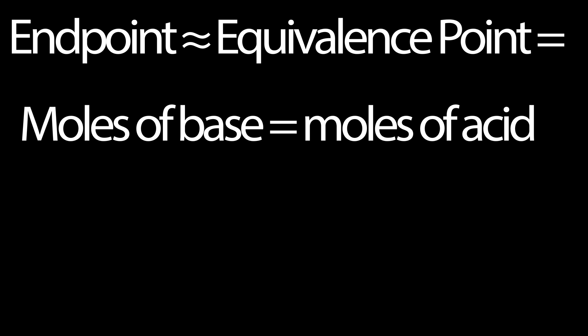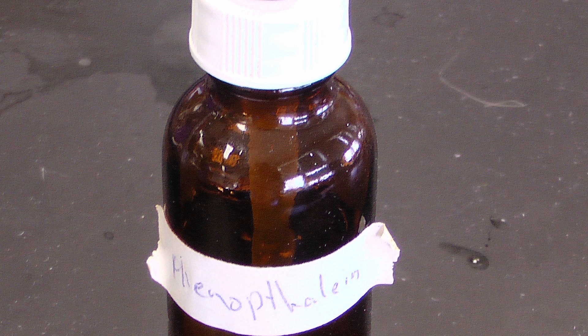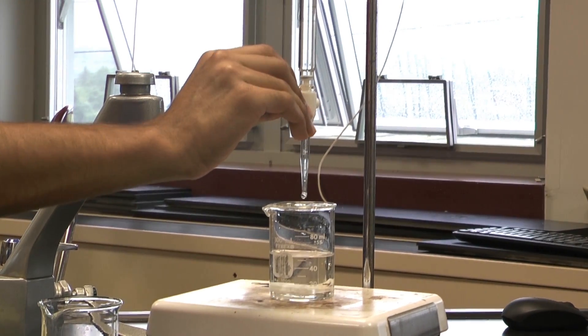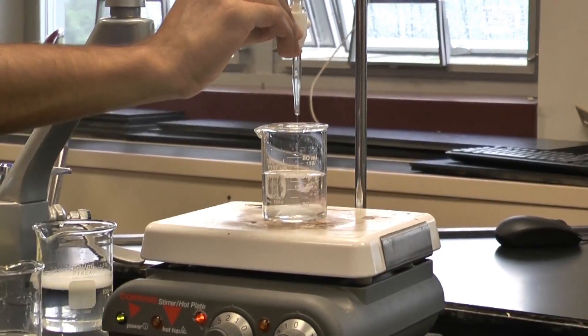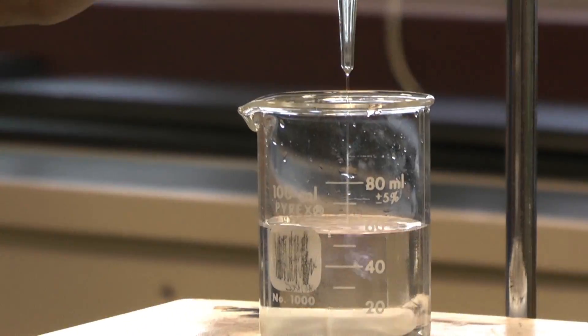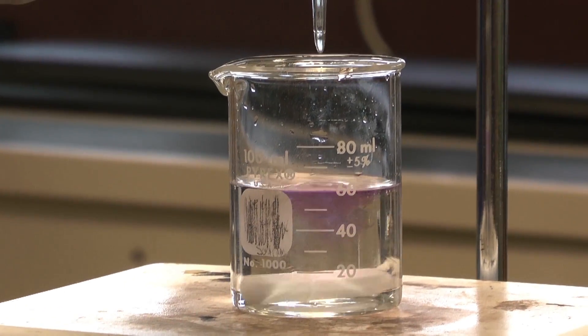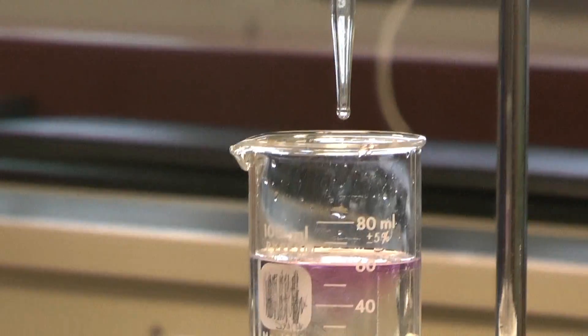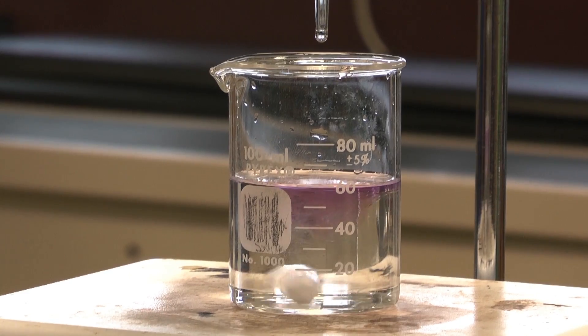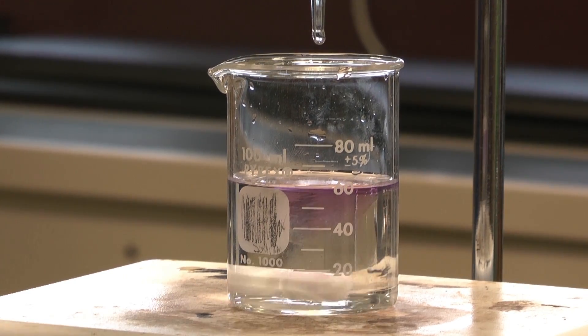The endpoint is when the number of moles of base added is equal to the number of moles of acid. In this weak acid-strong base titration, phenolphthalein was used. Before any base is added, add one or two drops of the indicator into the solution. Once everything is set up, drop the base into the acid in a dropwise manner, because the reaction occurs very rapidly near the endpoint. The base is continually dropped into the solution until the solution has turned a pale pink color and it remains this color without fading.